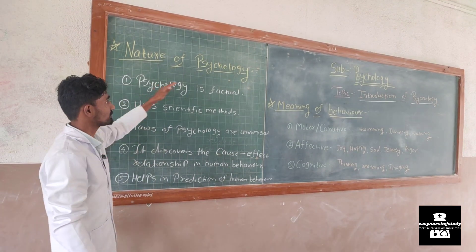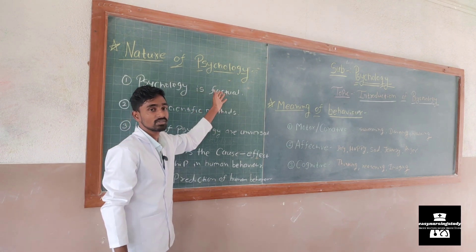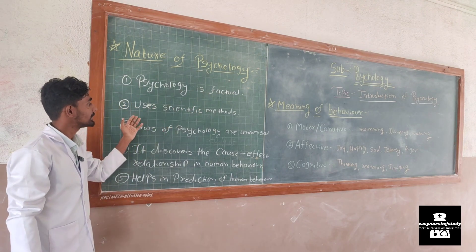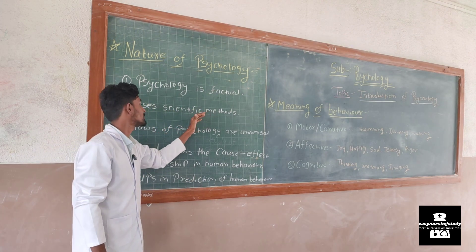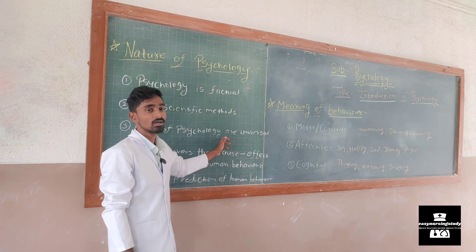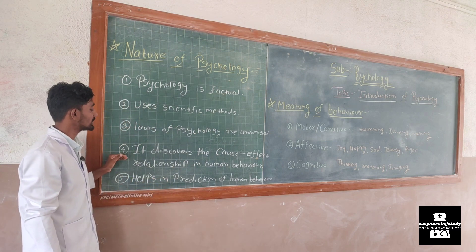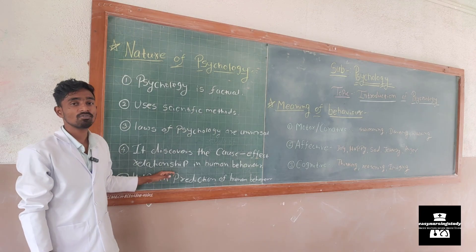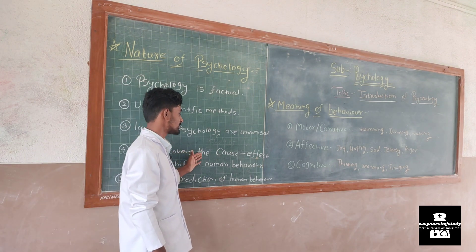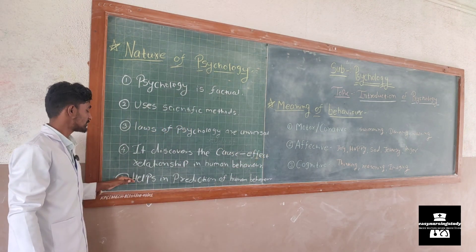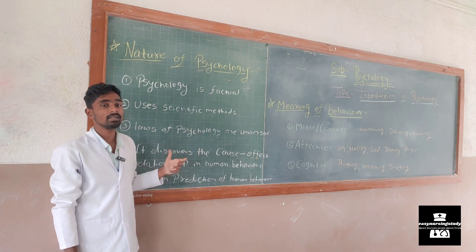Next we will study the nature of psychology. The first nature is that psychology is factual — it totally trusts on facts. The second nature is that it uses scientific methods to predict the behavior of an individual. The third nature is that the laws of psychology are universal across every country. The fourth nature is that it discovers the cause and effect relationship of human behavior — for example, if a person has depression or any psychiatric condition, psychology studies the cause and its effect. The fifth nature is that it helps in prediction of human behavior through its laws and scientific methods.